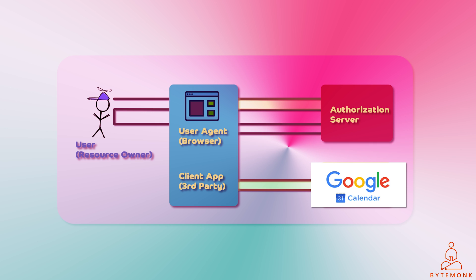In the Google example, the Google Authorization Server is also the Google Identity Provider — the entity that authenticates the user and issues the access token. This is because Google is a large, trusted organization that can provide both authentication and authorization services. However, in other cases, the authorization server and identity provider may be separate entities. For example, a company might use a third-party identity provider to authenticate its users and then use its own authorization server to grant access to its protected resources. The important thing to remember is that the authorization server and identity provider are two different roles in the OAuth 2.0 authorization framework.